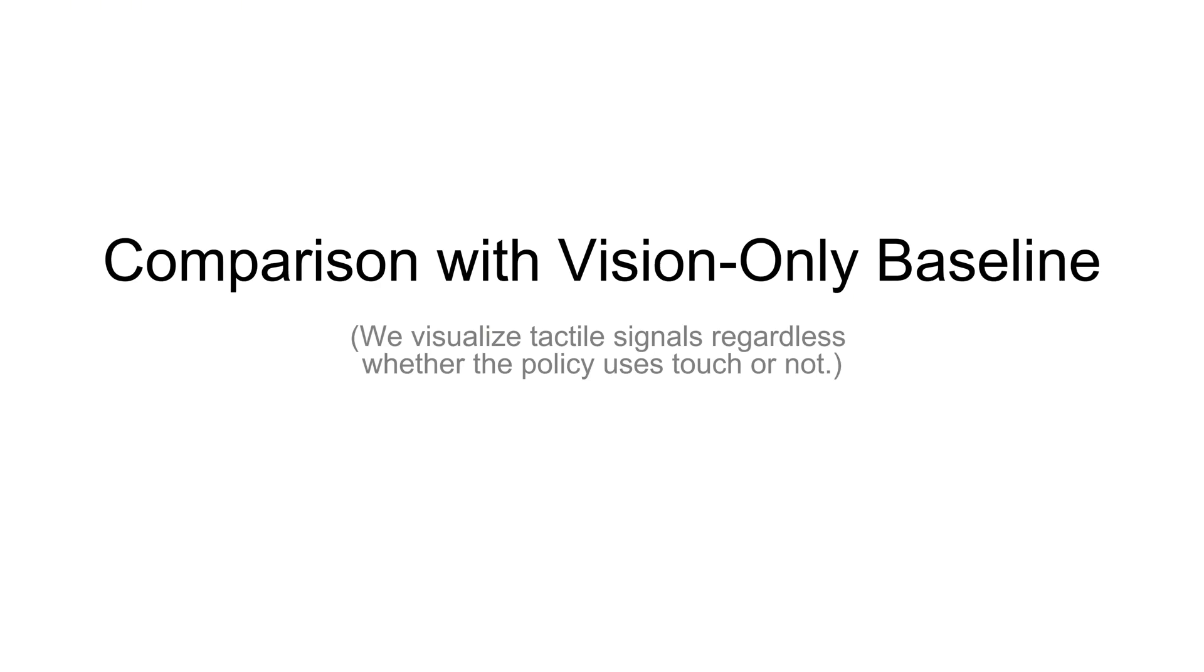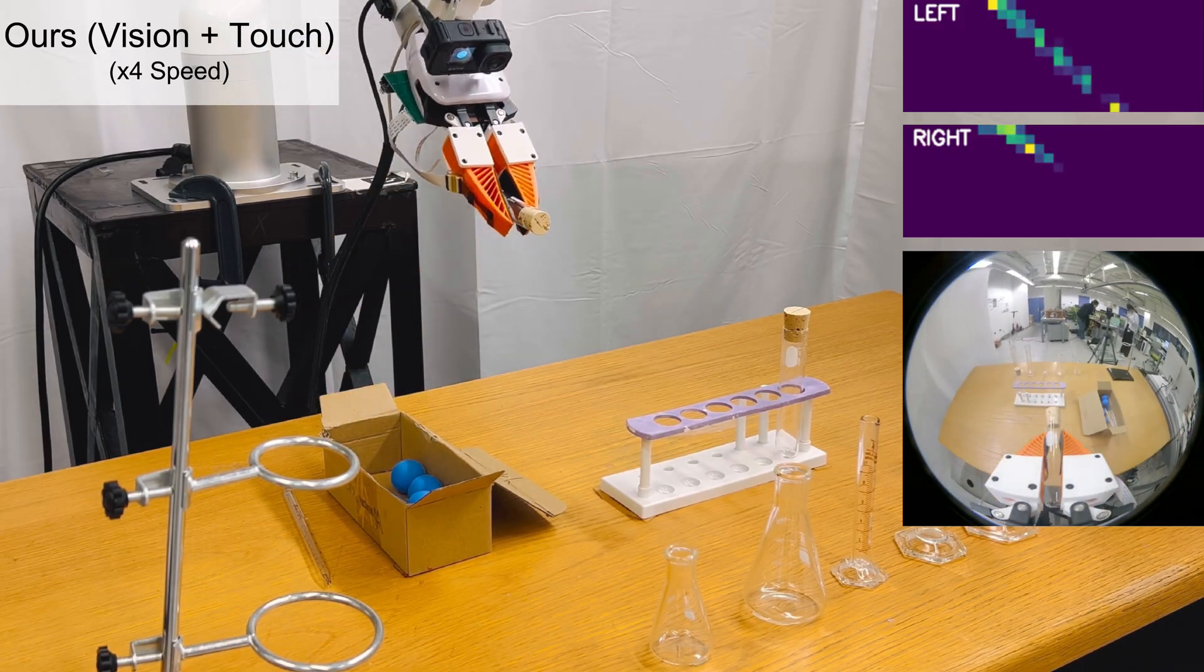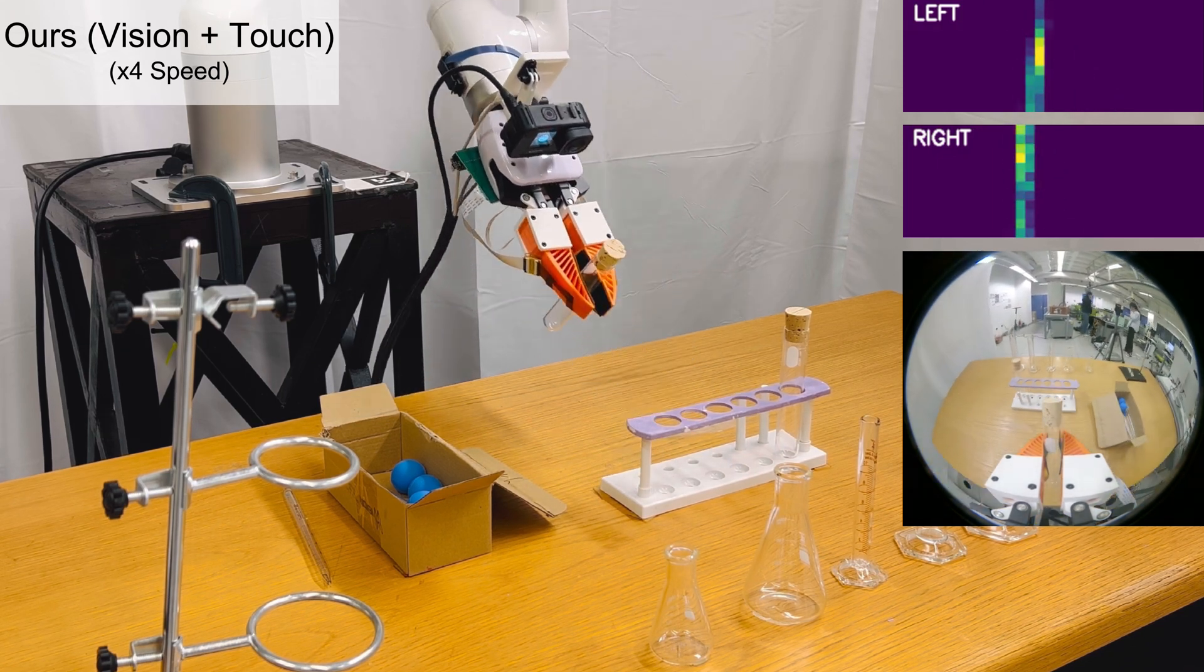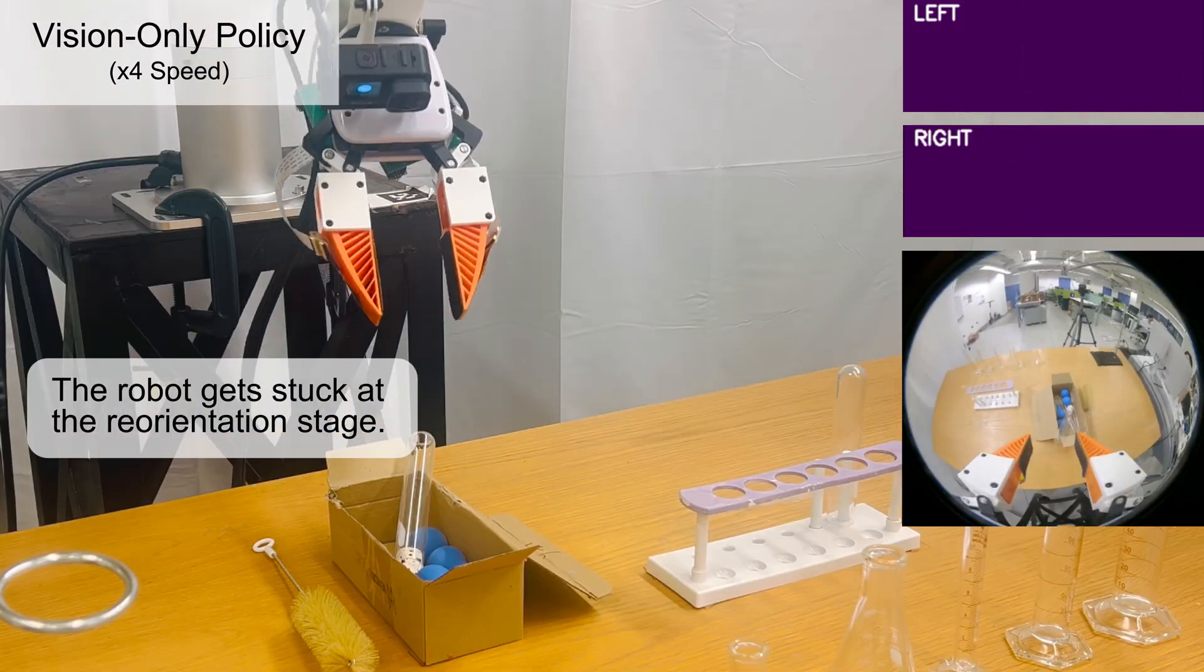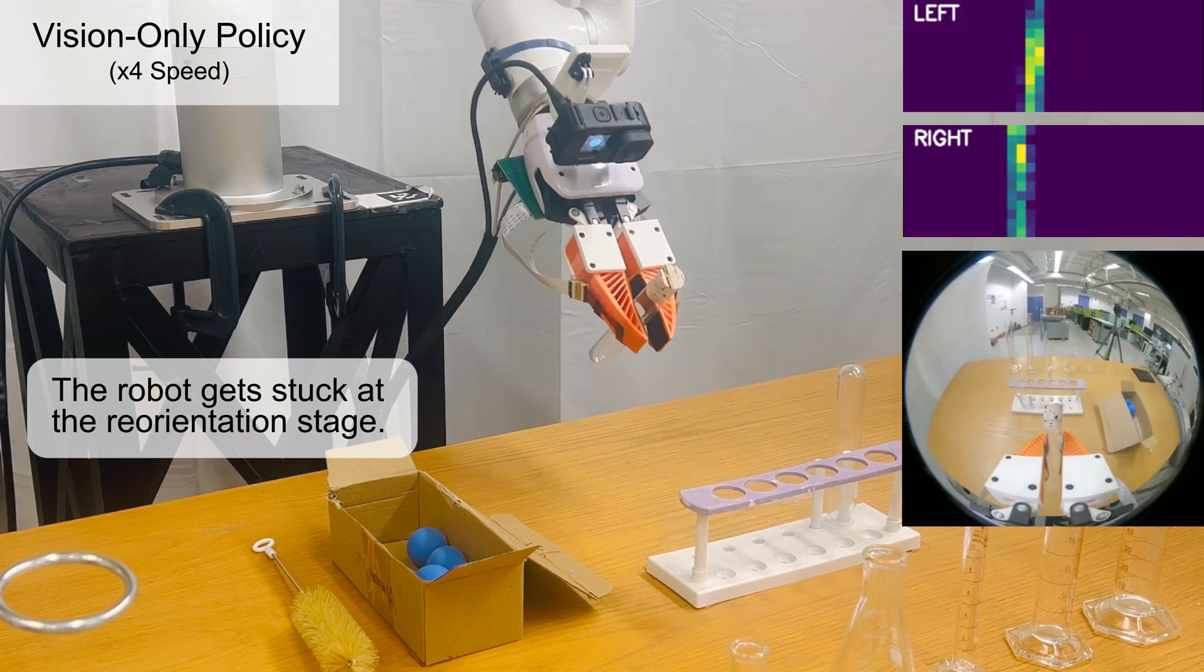Let's compare our pre-trained visual tactile policy with baselines. In the test tube collection task, our policy can complete the entire task from reorientation to insertion reliably. However, the vision-only policy gets stuck at the reorientation stage and does not attempt insertion.